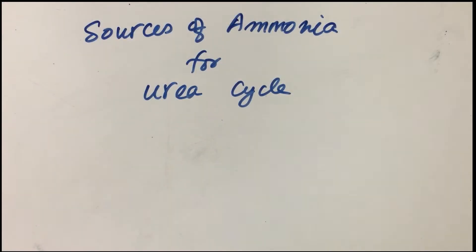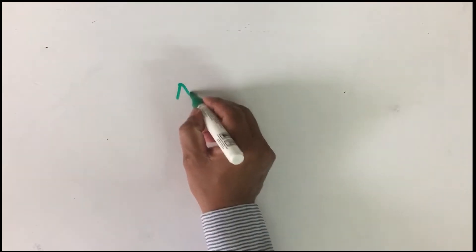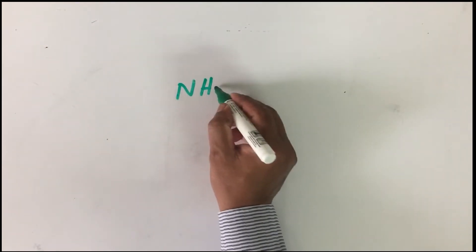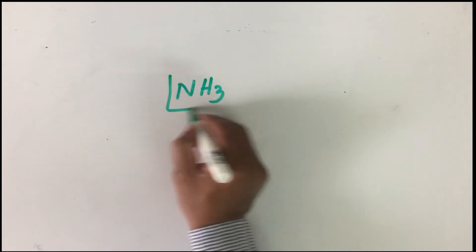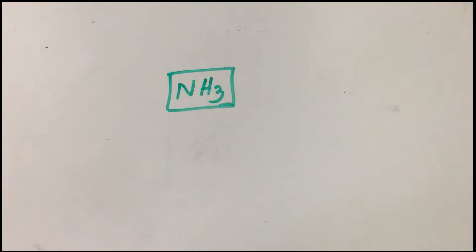Finally, let us summarize all that we have seen by looking at what is the source of ammonia for the urea cycle. This is basically a kind of a summary — the ammonia for the urea cycle. Let us see what is the source of it.